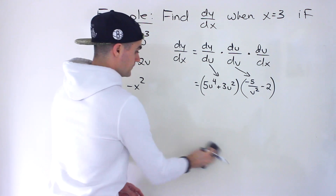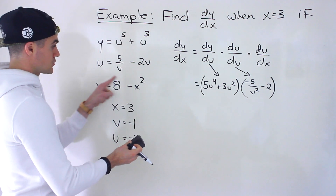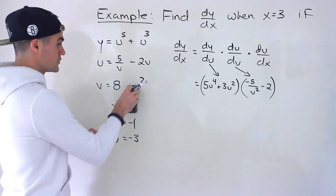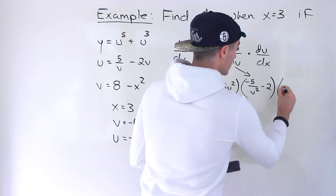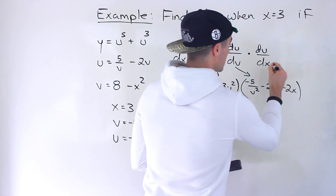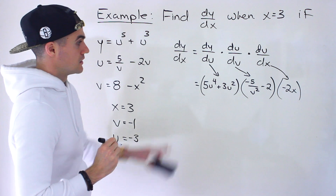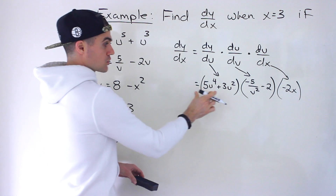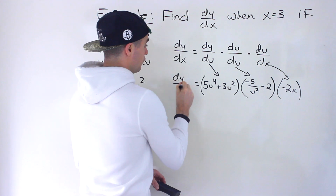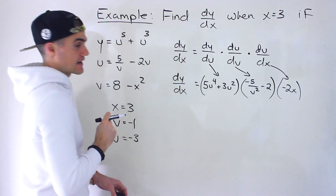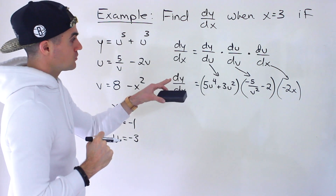For dv/dx, it's the derivative of 8 minus x squared. The derivative of 8 is 0, and the derivative of negative x squared is negative 2x. So dv/dx equals negative 2x. That gives us the full general expression for dy/dx in terms of u, v, and x — that's the general expression using the chain rule.